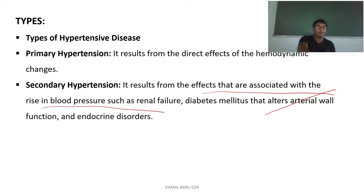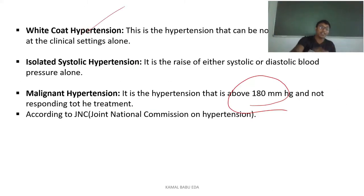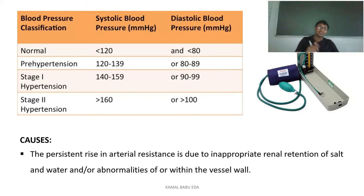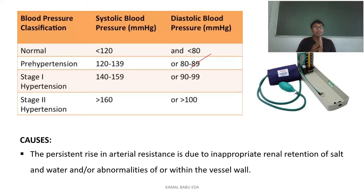Now, looking at the blood pressure classification: systolic 120–139 mmHg and diastolic 80–89 mmHg is called pre-hypertension. Stage 1 hypertension is systolic 140–159 mmHg and diastolic 90–99 mmHg. Stage 2 hypertension is a very severe form — systolic beyond 160 mmHg and diastolic beyond 100 mmHg.